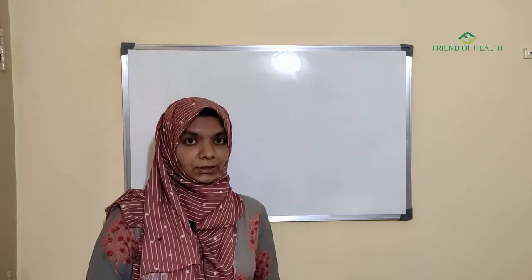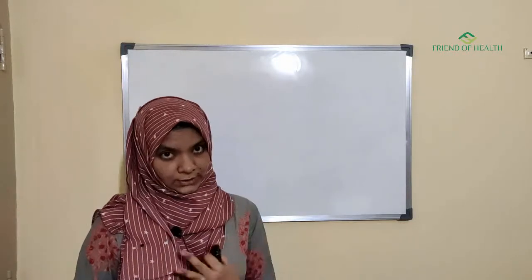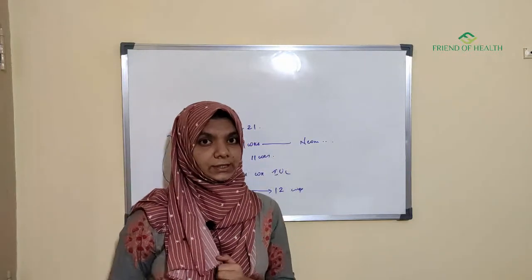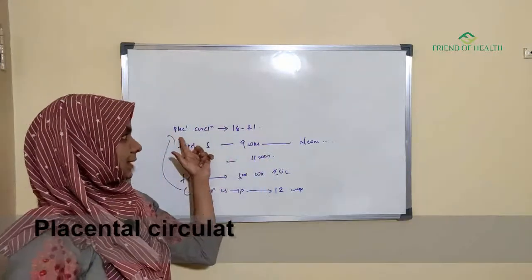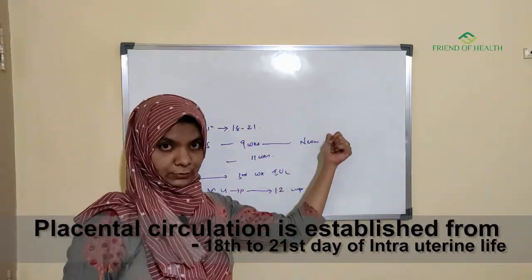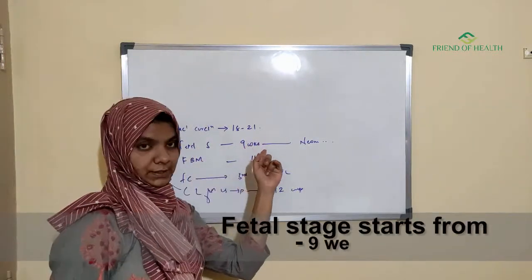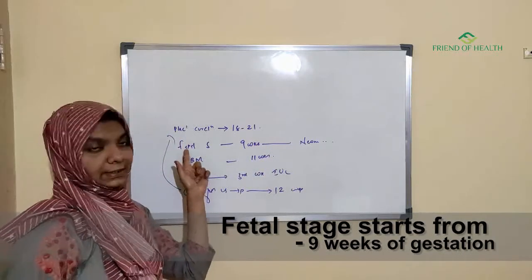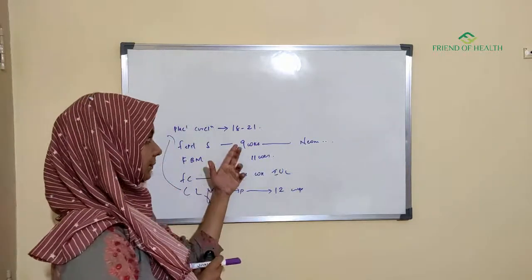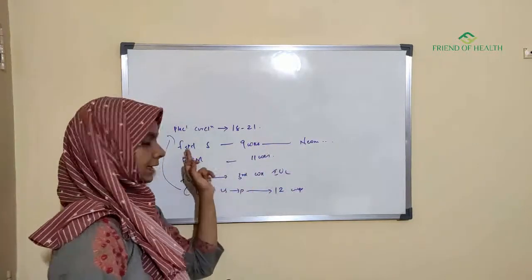Now, important events inside the mother's womb in chronological order: placental circulation is established from days 18 to 21 of intrauterine life. The fetal stage starts from nine weeks of gestation onwards — this is when we consider the baby to be in the fetal stage.